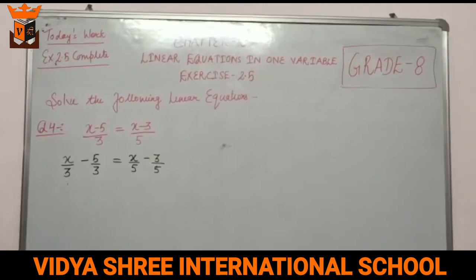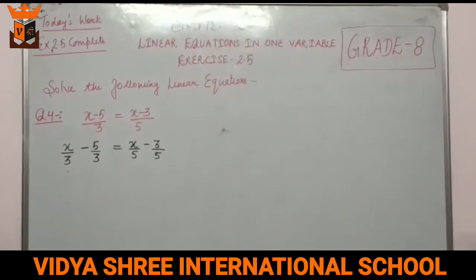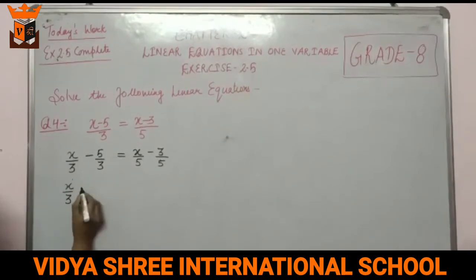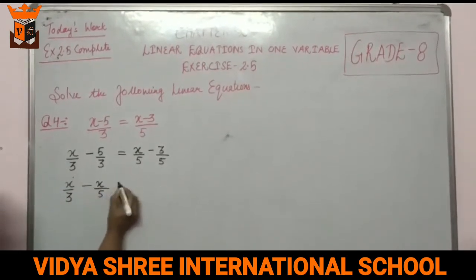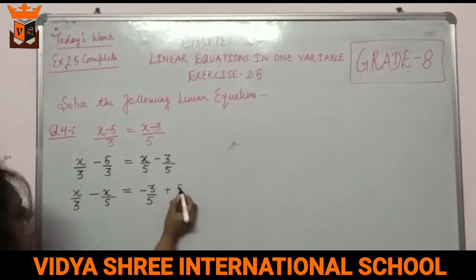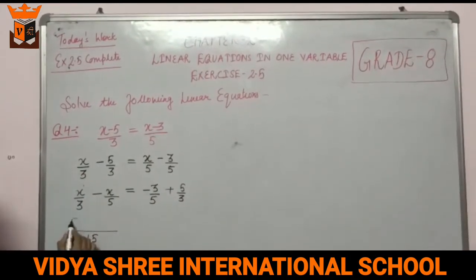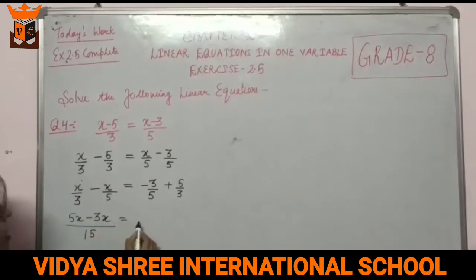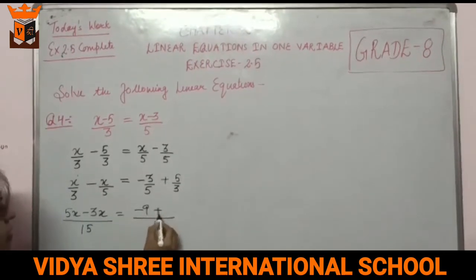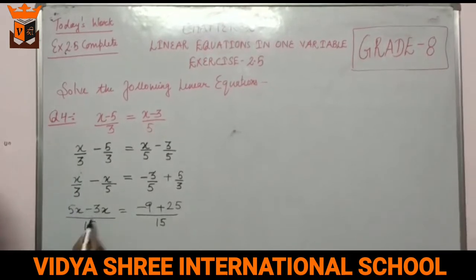Now we follow the same procedure — collect all x terms on the left hand side and all numbers on the right hand side. So x/3 minus x/5 on the left, and minus 3/5 plus 5/3 on the right. The LCM of 3 and 5 is 15.